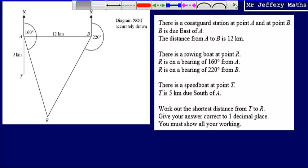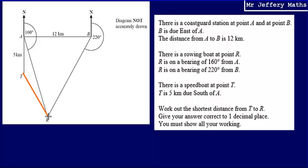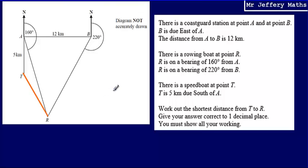Let's draw in the distance from T to R. This is going to be a trigonometry question with non-right-angled triangles. The first thing to recognise is that angle TAR is going to be 20 degrees. Because T is due south of A, and the bearing to R is 160, that angle has to be 20 because it's on a straight line.